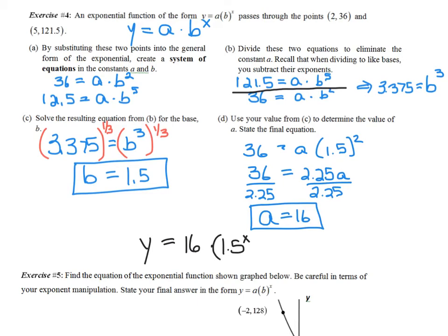So the exponential equation is y equals 16 times 1.5 to the x power. Since b is greater than 1, this represents an exponential growth function — which makes sense because as x increased, y increased by multiplying.